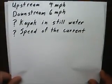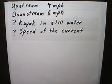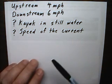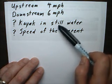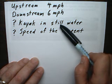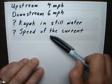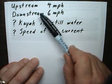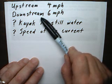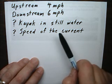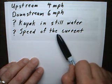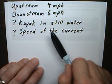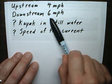I started to write the information they give us and what we're asked to find out. The clues really come in what they ask us to figure out. The kayak in stillwater is one thing we have to figure out, and the speed of the current is the other. Going downstream, the kayak goes faster, because you take the speed of the kayak in stillwater and add the speed of the current to get how fast the kayak goes downstream.